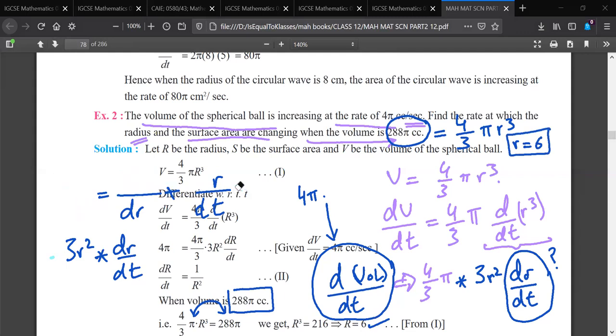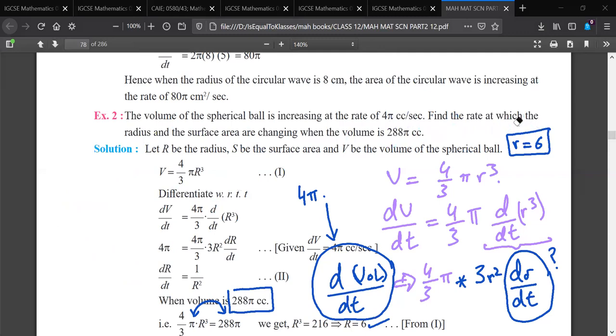Can I ask you a doubt? No, sir. That's why I suggest you to make solved examples. In the next exam, you have a solved example. r is equal to 6. So this means 4π is equal to 4 by 3 π into 3r², 36 dr/dt.